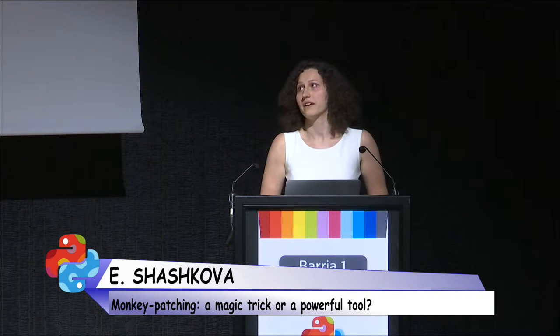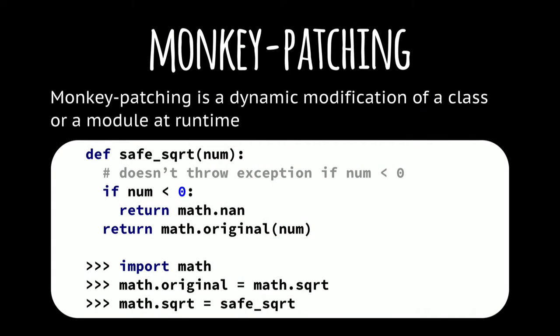Monkey patching is a dynamic modification of a class or a module at runtime. Here is a simple example. The standard module math has a square root function which returns the square root of a number. But if the number is negative, this function raises an exception. We want to change the behavior of this function. So we save the original square root function to the attribute 'original' of the module math and replace the square root attribute with our new function, 'safe_sqrt', which doesn't raise an exception for negative numbers and returns the NaN constant defined in the math module.